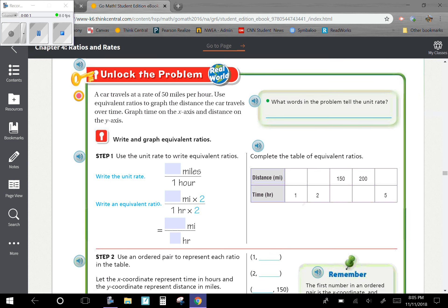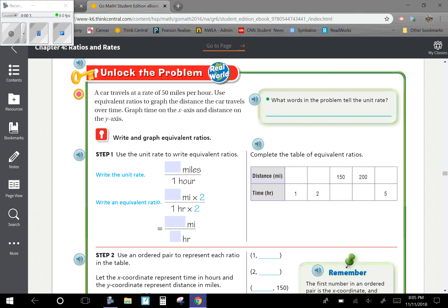Unlock the problem. A car travels at a rate of 50 miles per hour. Use equivalent ratios to graph the distance the car travels over time.